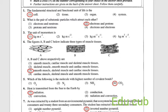Fourth one: the figures A, B and C below indicate three types of muscle tissues. Look at the diagrams carefully. A, B and C above respectively are smooth muscle, skeletal muscle, and cardiac muscle tissue. So the answer is the third one.